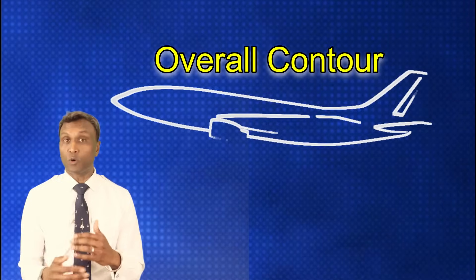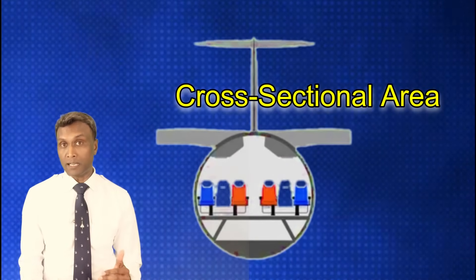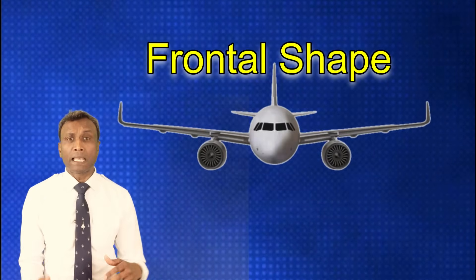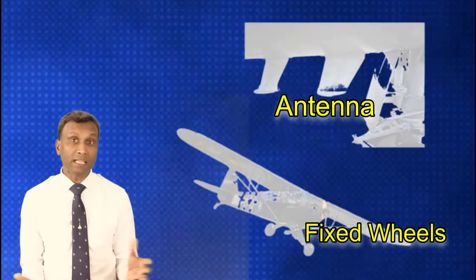Form drag, or pressure drag, arises from the aircraft's shape, influenced by its overall contour, cross-sectional area, and frontal shape, including elements like rivets, antennae, and fixed wheels. Designing the aircraft with streamlined features is crucial to mitigate form drag.